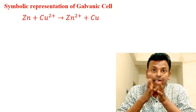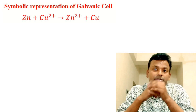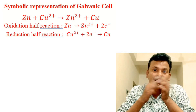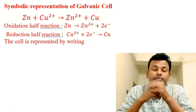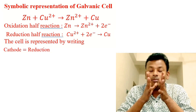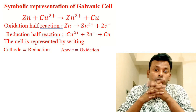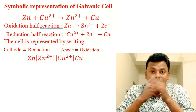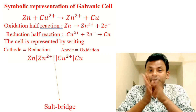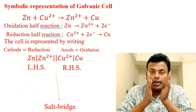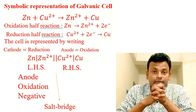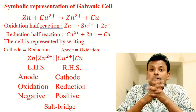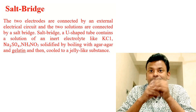Symbolic representation of a galvanic cell: the chemical reaction is Zn + Cu²⁺ → Zn²⁺ + Cu. The oxidation reaction is Zn → Zn²⁺ + 2e⁻, and the reduction reaction is Cu²⁺ + 2e⁻ → Cu. The cell is represented as: Zn | Zn²⁺ || Cu²⁺ | Cu. The left-hand side is the anode (oxidation, negative), and the right-hand side is the cathode (reduction, positive), separated by the salt bridge.